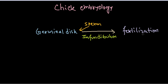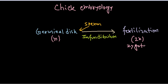After fertilization, cell division will start. The germinal disc, which previously had n number of chromosomes, will now become a zygote with 2n chromosomes. This is our zygote condition. The zygote will now start cell division, which actually begins after about 5 hours of zygote formation — a preparatory phase for the zygote to develop everything required before cell division.